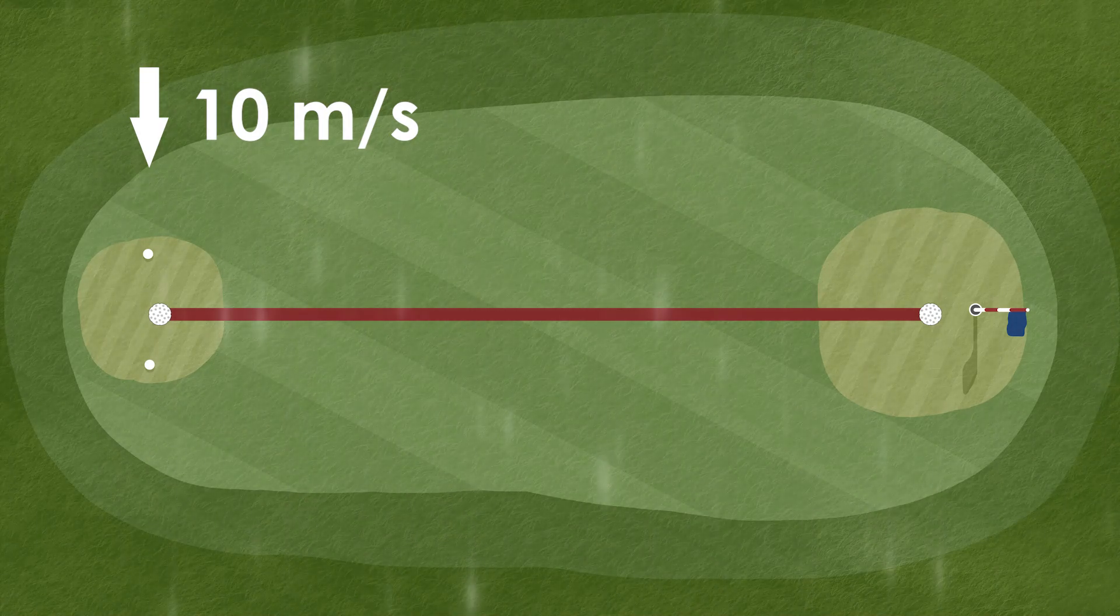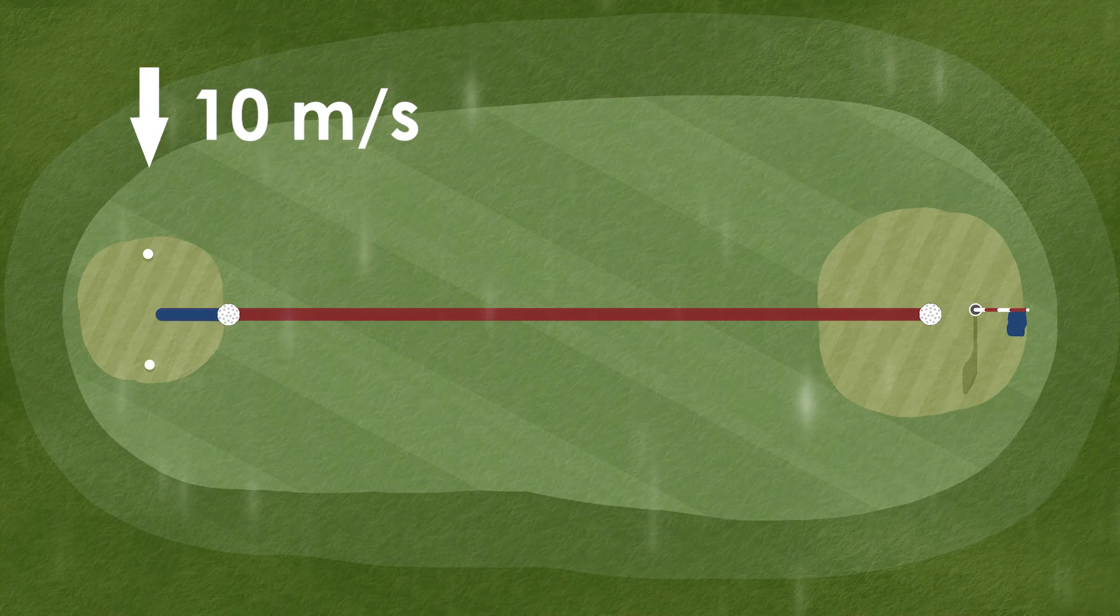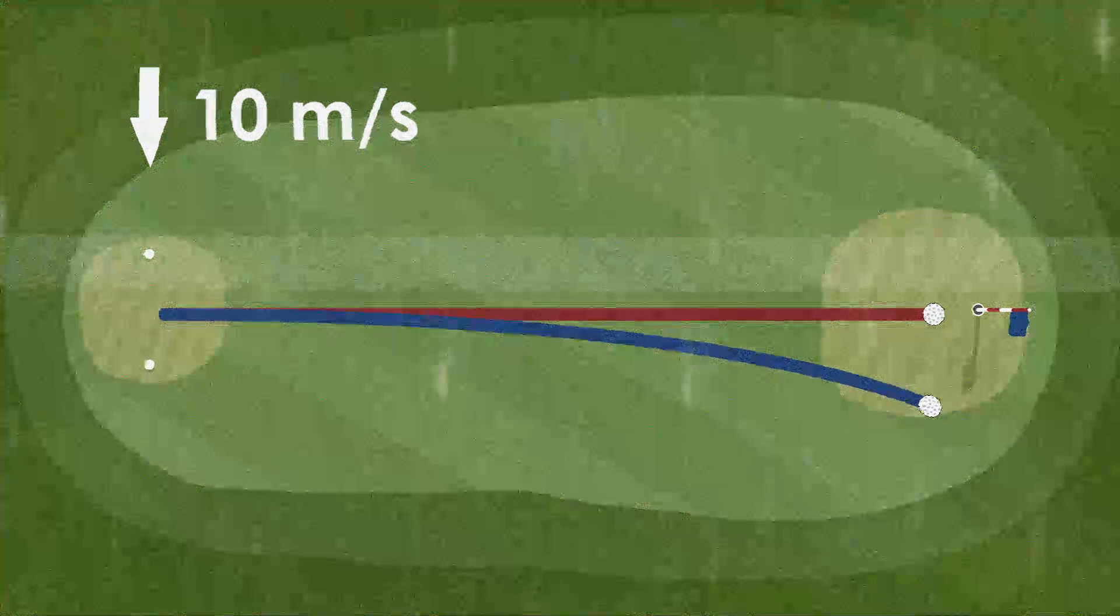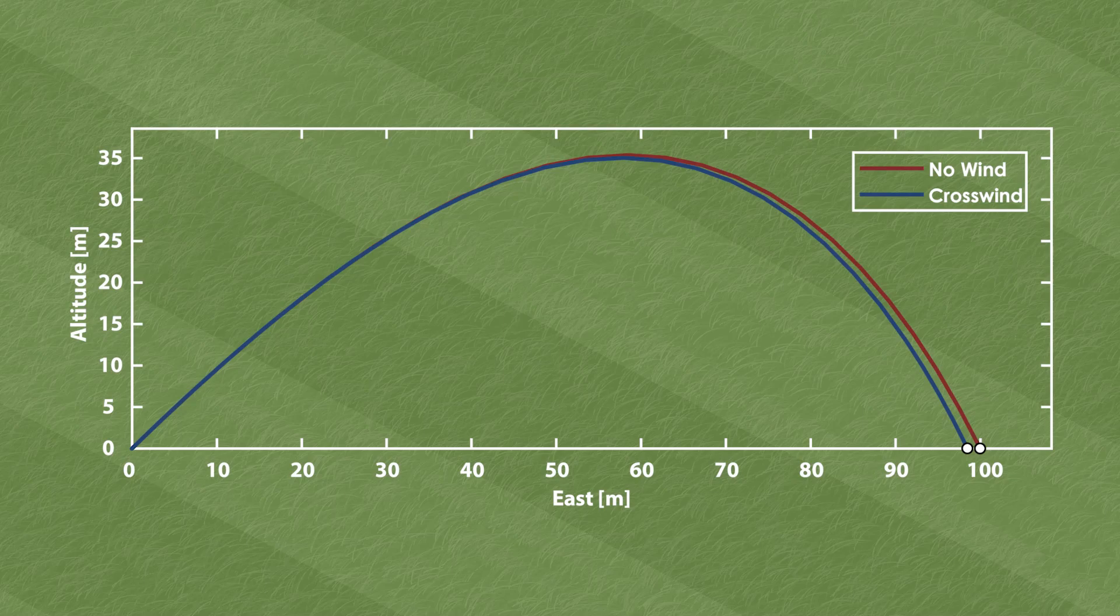Well, the intuitive answer might be that the ball goes the same distance but will be blown to the side by some amount. However, if we run this through a simulation, we find out that the ball doesn't go the same distance. It actually travels slightly less than 100 meters.